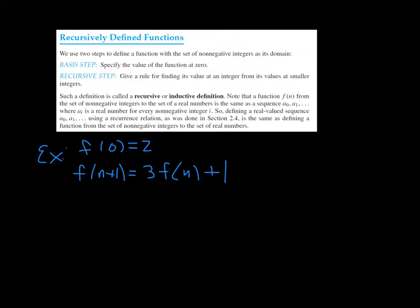To define a function recursively, you start out with a basis step, and that's when you specify the value of the function at 0 — or sometimes you'll start at 1 or 2, you don't always have to start at 0, but usually you will. And then after you have your basis step, you have what's called the recursive step, and that's where you give a rule for finding the value of the function in terms of smaller values.